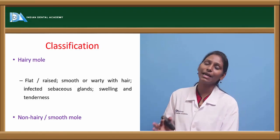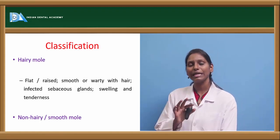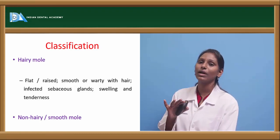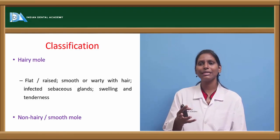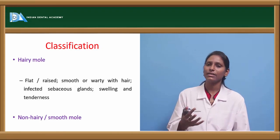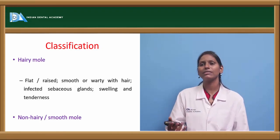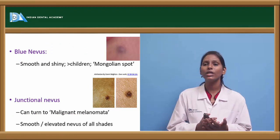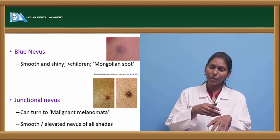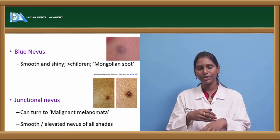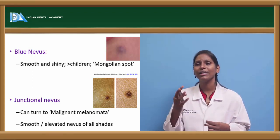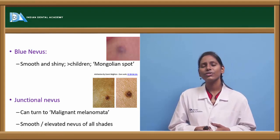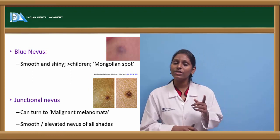Classification of benign melanocytic lesions: hairy mole is a flat or raised macule with hair, commonly seen with infected sebaceous glands. Non-hairy or smooth mole is flat or raised without hair. Blue nevus appears blue due to being deep in the tissue causing light refraction — also called Mongolian spot, commonly seen in children with a smooth and shiny surface. Junctional nevus has high malignant potential and can transform into malignant melanoma.